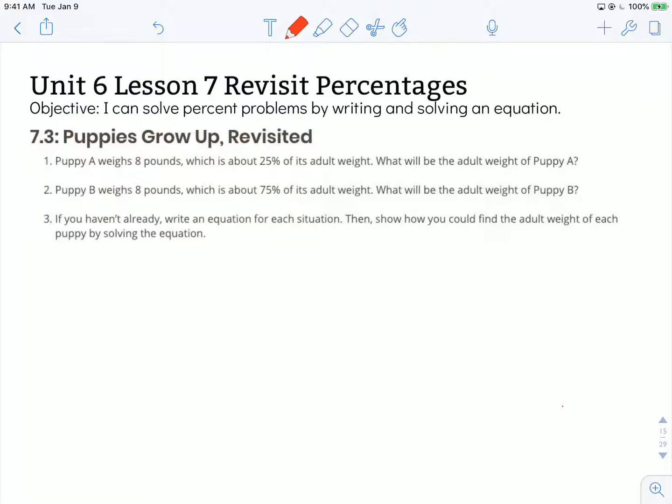The objective says, I can solve percent problems by writing and solving an equation. We're looking at Activity 7.3, Puppies Grow Up Revisited.